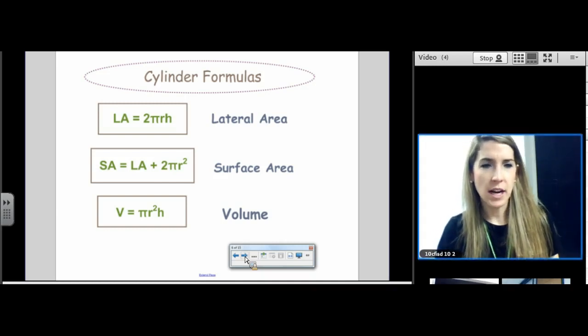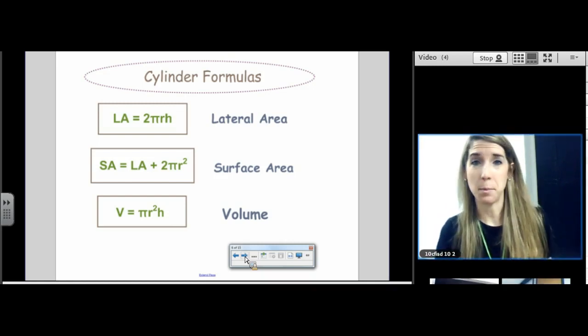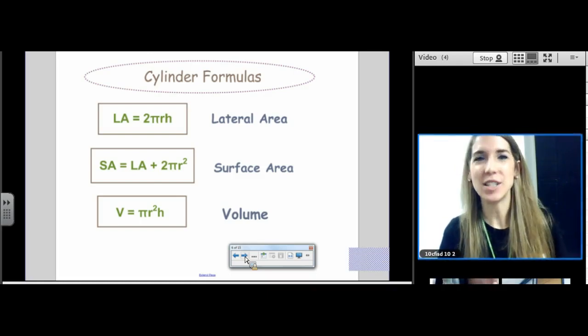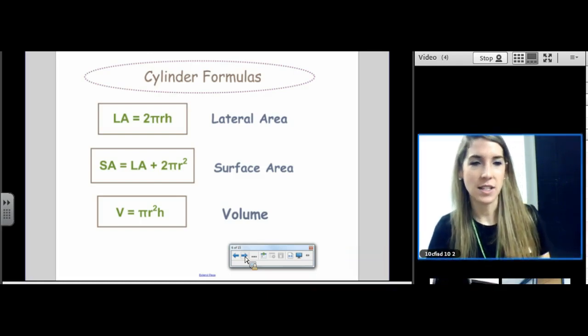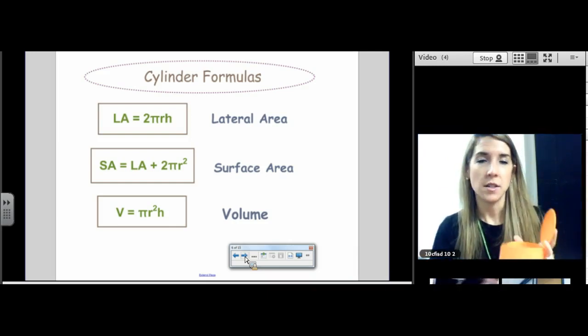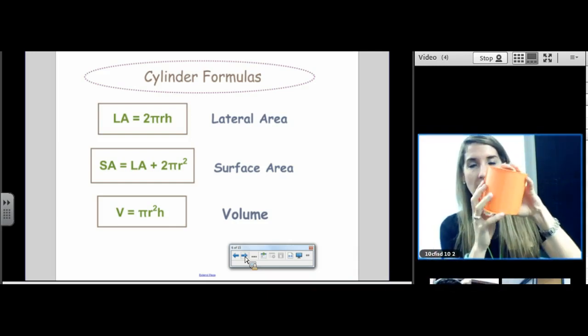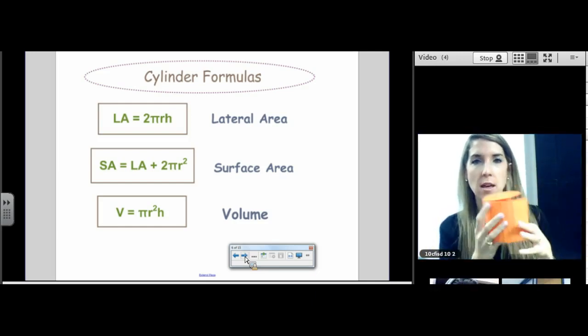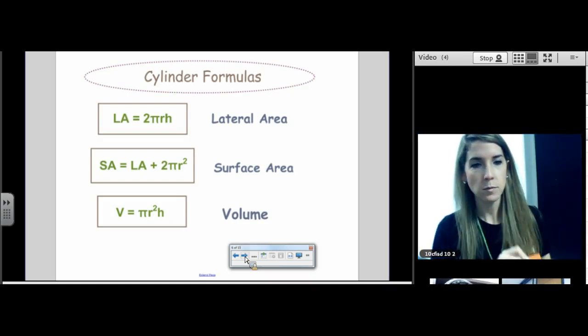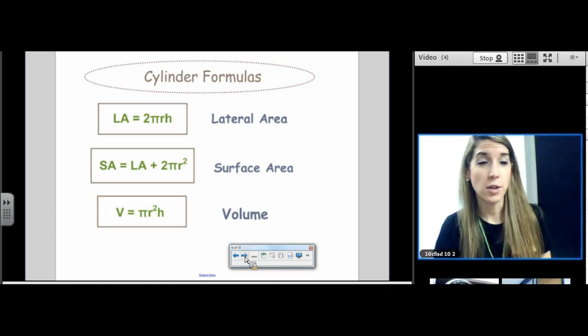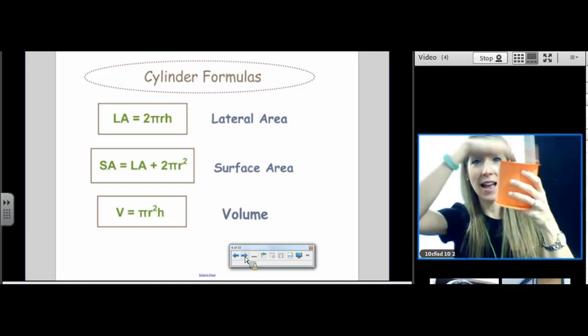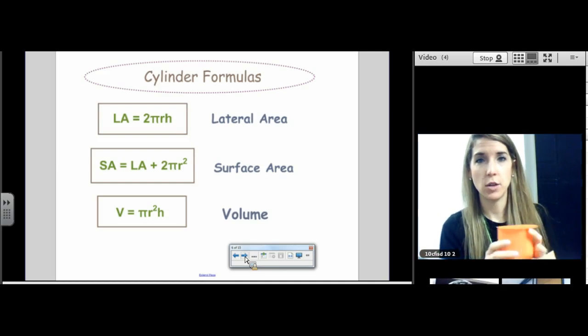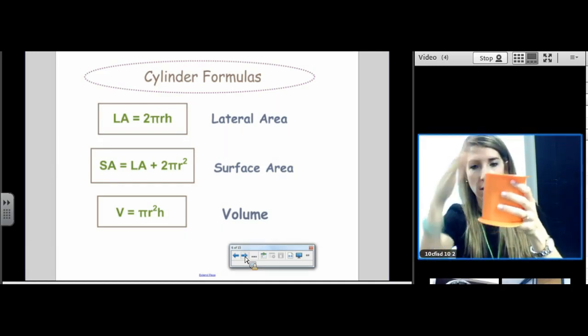The lateral surface area is 2πrh. That's the same as a prism, ph. But our P is not really a perimeter, it's a circumference. So that's why it's 2πrh. It's the circumference times the height. So that's if I were to paint only the rectangle, if I were to paint only the rectangle, it would be the circumference times the height. The next one, to find the total surface area, you take the lateral, and then you want to add two circles to it. So 2πr². Two circles, the top and the bottom. πr², πr².